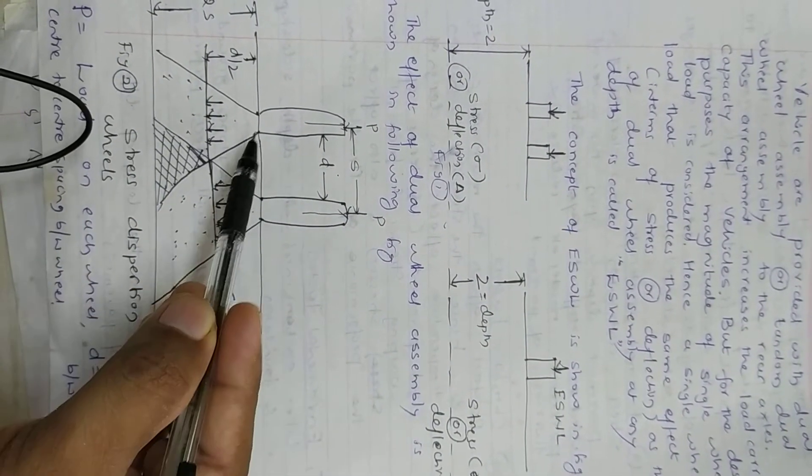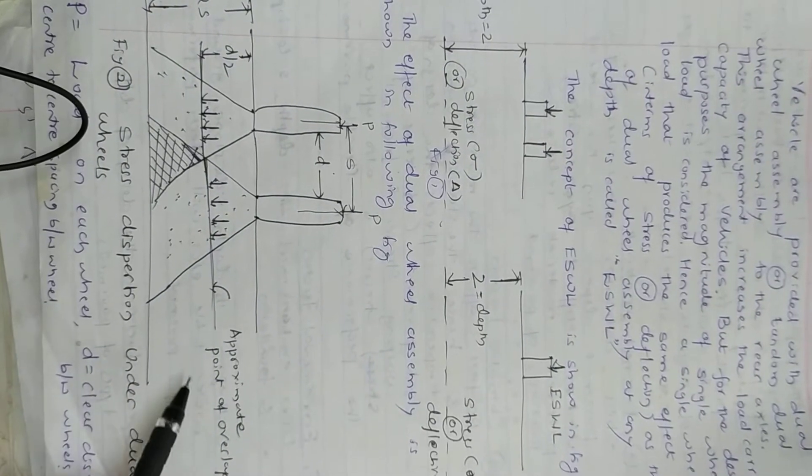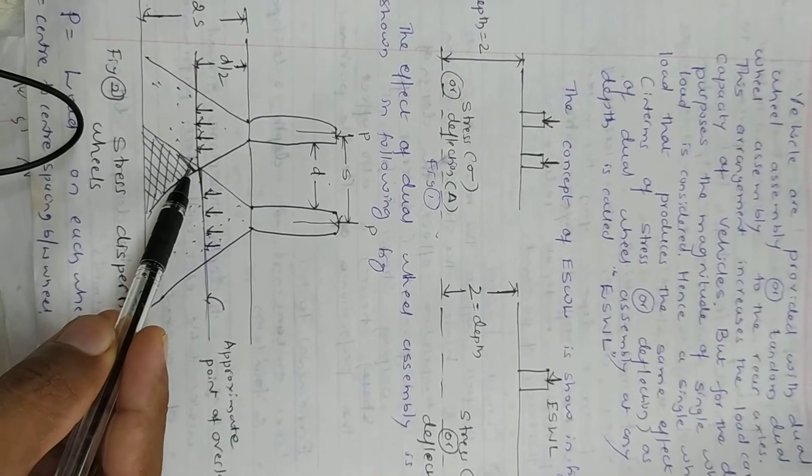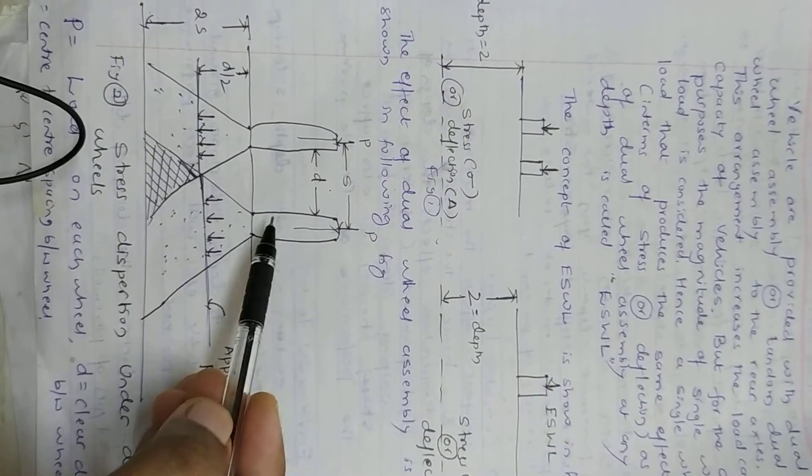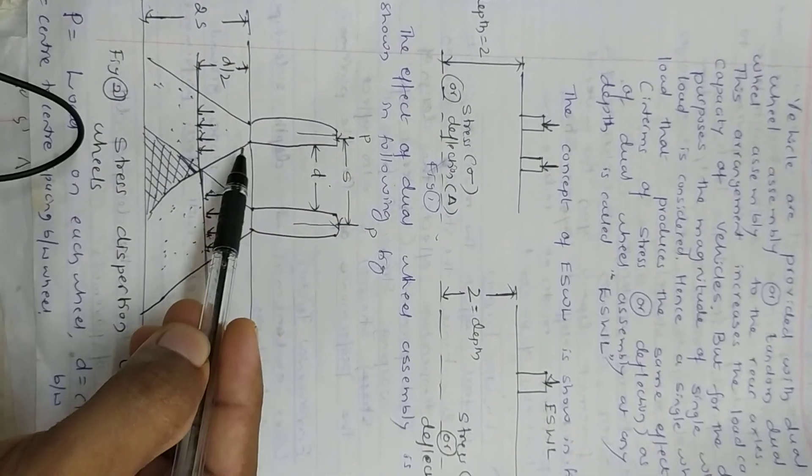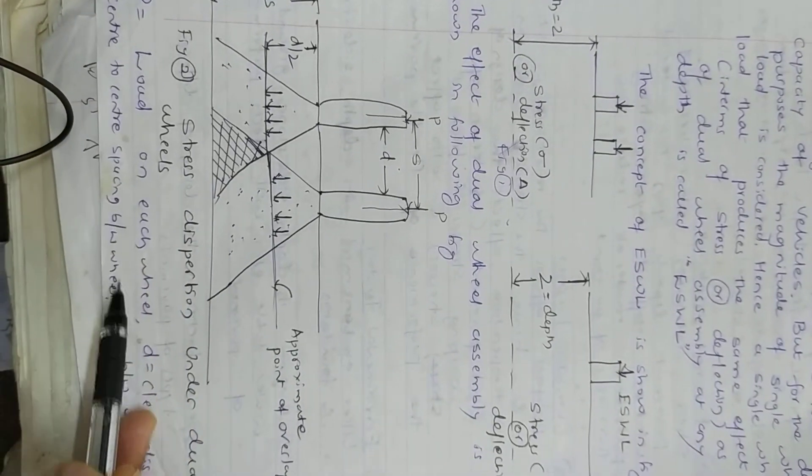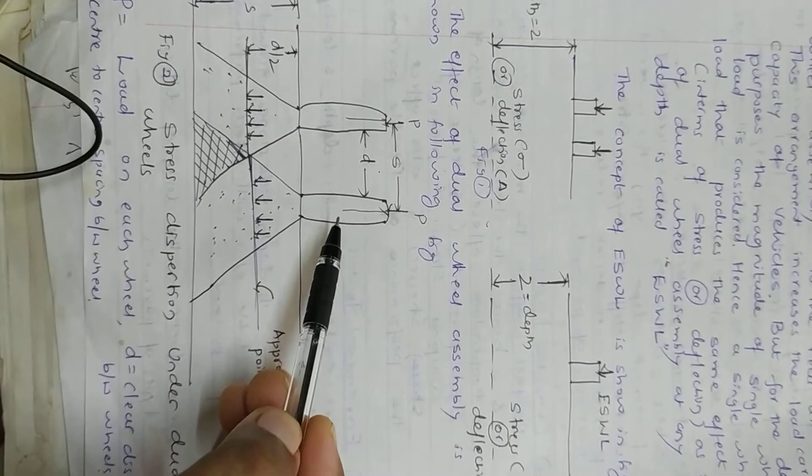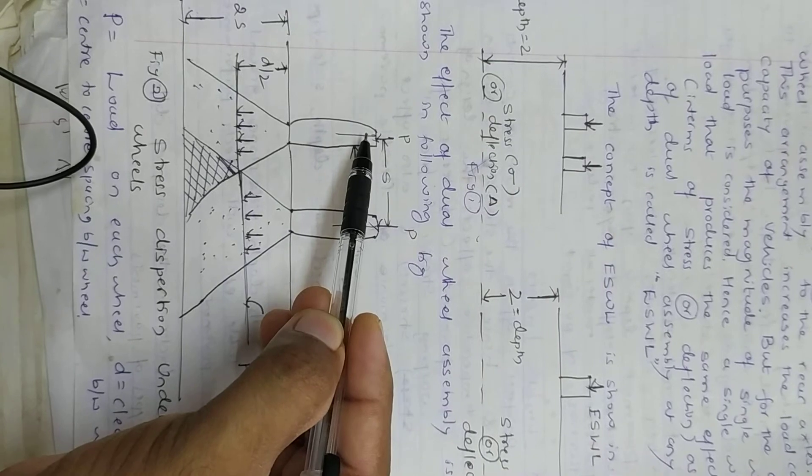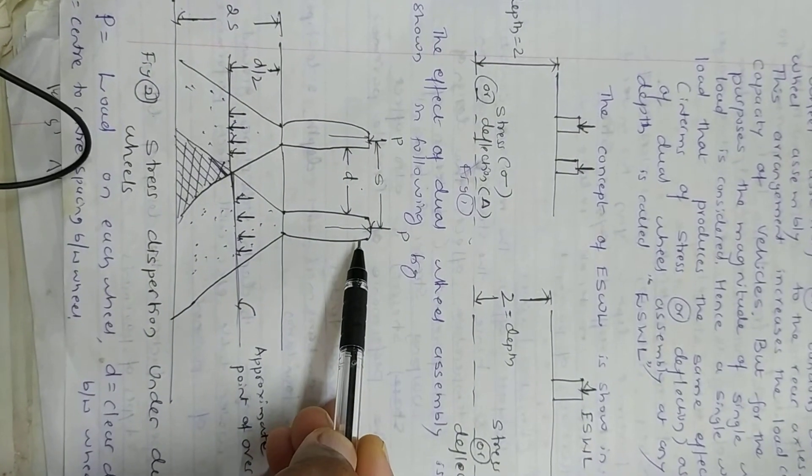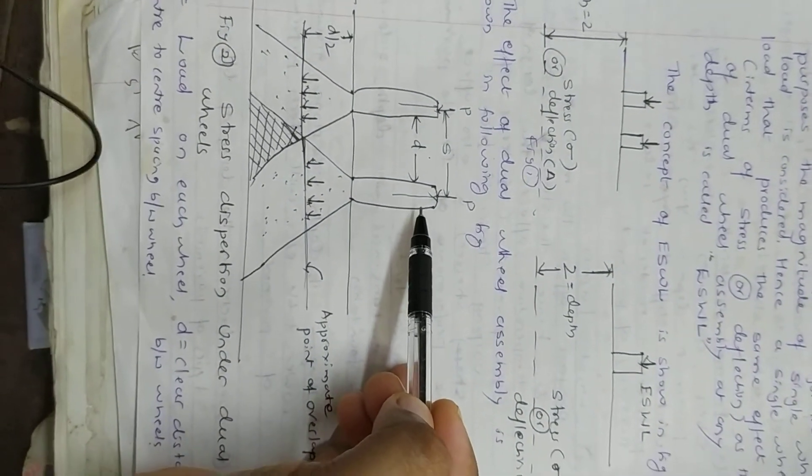You can see here the approximate point of overlapping. The stresses and load acting on the road surface are distributed in this way. Here, P is the load on each wheel - this is one wheel, this is another wheel - so P is the load acting on each wheel.